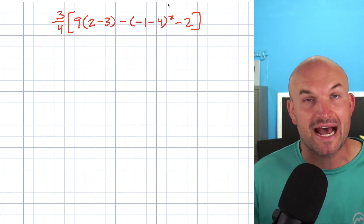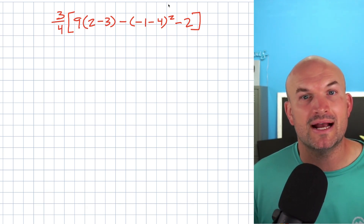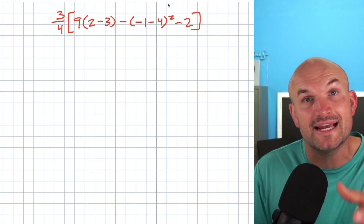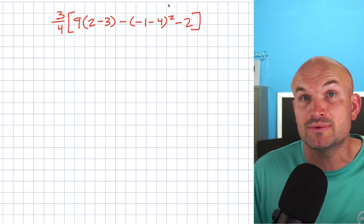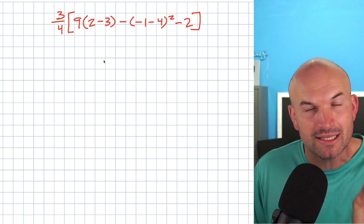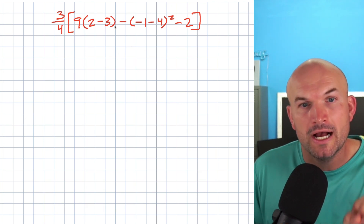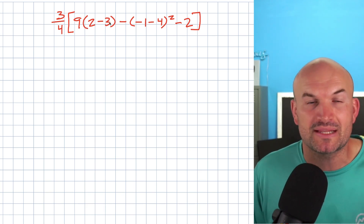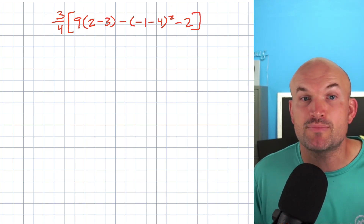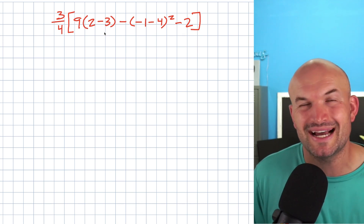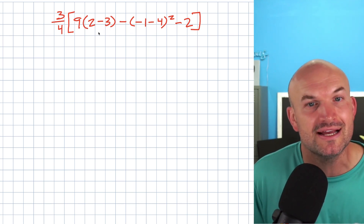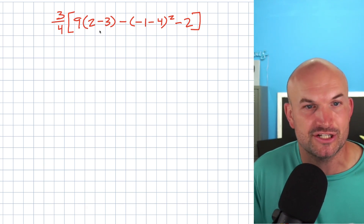Think about peeling an onion — we have the outer layer, and we could have multiple different layers or multiple different grouping symbols. But we want to look at the innermost core. We want to look at the core of the problem and simplify those expressions first. In this example, I have two expressions that I can simplify that are not going to impact each other.